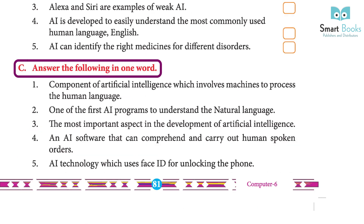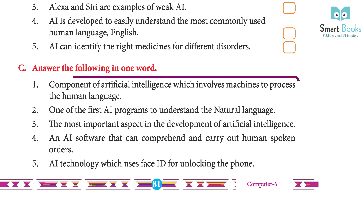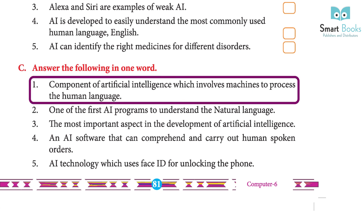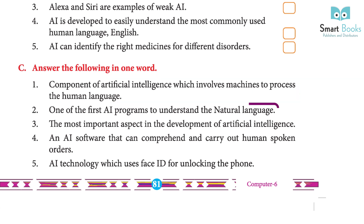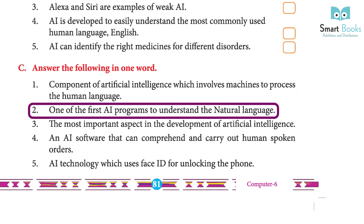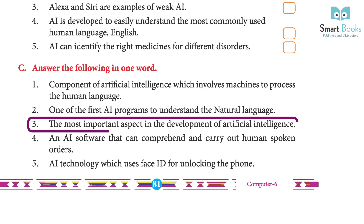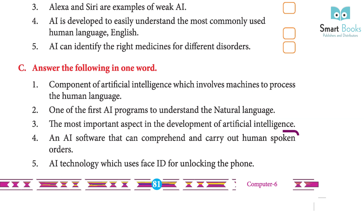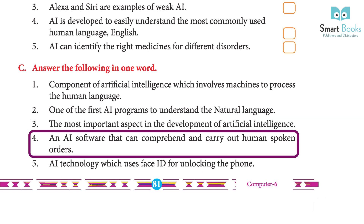C. Answer the following in one word: 1. Component of artificial intelligence which involves machines to process the human language — Answer: Language Understanding. 2. One of the first AI programs to understand natural language — Answer: SHRDLU. 3. The most important aspect in the development of artificial intelligence — Answer: Problem Solving. 4. An AI software that can comprehend and carry out human-spoken orders — Answer: Voice Assistant.